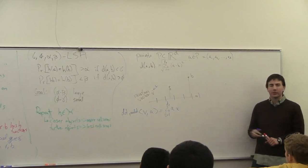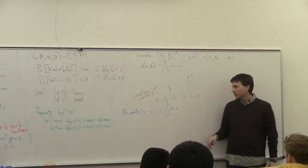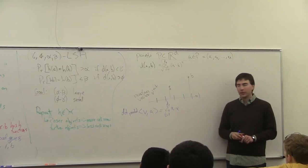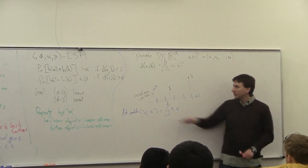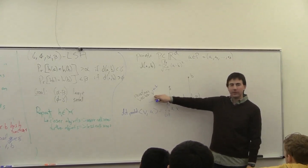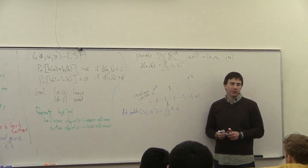It only works if I can actually compute this quickly, right? This I can compute by just scanning all of the points basically at the same time as reading a point. But I need to compute this random vector. I need to be able to compute a random unit vector in e-dimensions.